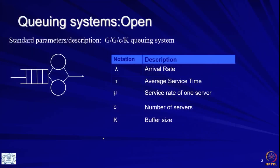I am just recapping whatever you have learned in the previous lectures. The notation: arrival rate lambda, tau, mu, c, k — by now you should really know what all of these things mean. Lambda is the arrival rate, tau is the service time, c is the number of servers, k is the buffer size, and mu is the rate at which each server serves.